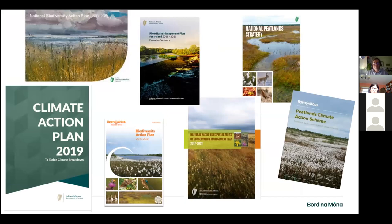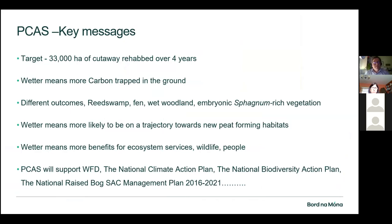All this work, though it might seem slow — maybe 20 dams a day, a hectare at a time — is really significant on a national scale and will feed into all the different sectoral plans: the Climate Action Plan, the National Biodiversity Action Plan, the River Basin Management Plan in terms of water quality, and the National Peatland Strategy in terms of raised bog restoration. This is really important for the Irish government in terms of how it manages peatlands and peatland land use.